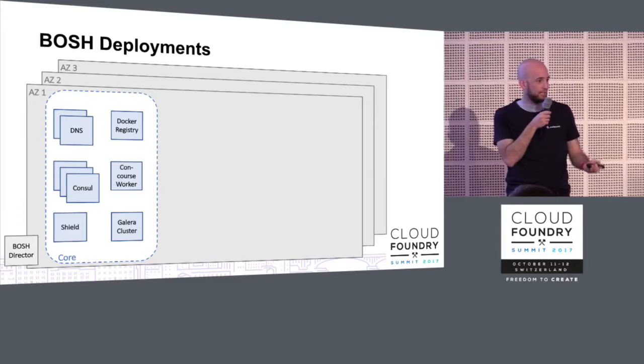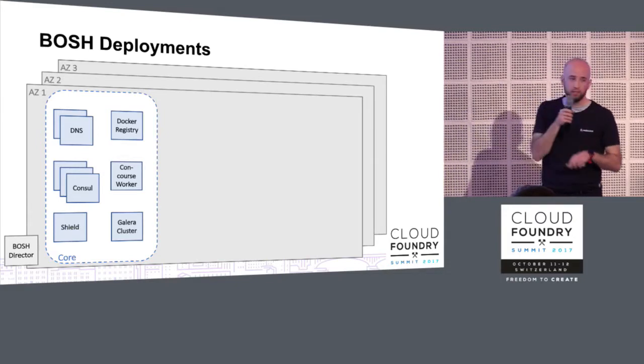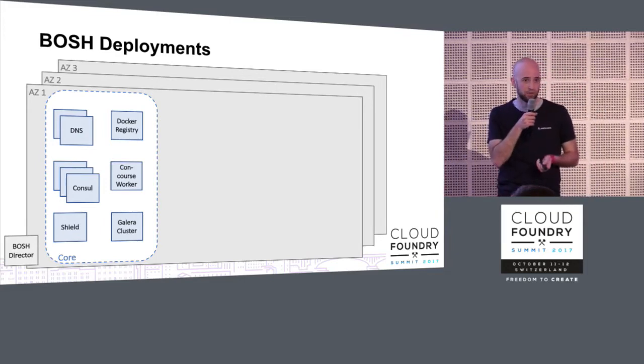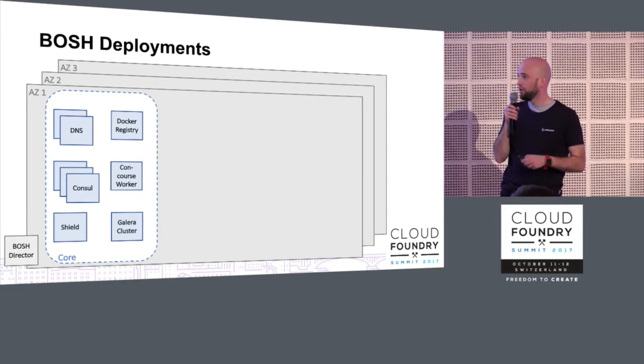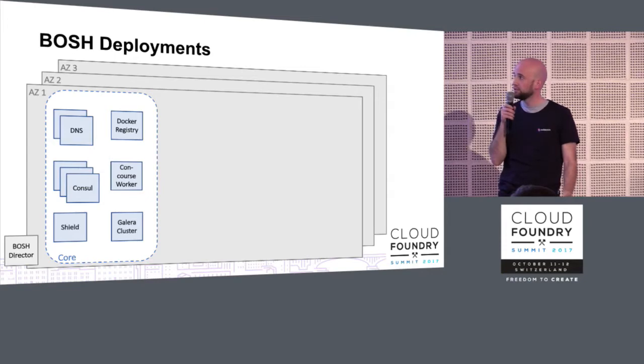The first thing we usually deploy is what we call the core infrastructure. Here we have a DNS deployment based on Unbound, which serves as the whole DNS backend for all the other components that follow. This goes together with the Consul cluster that we deploy. We actually have three Consul nodes per availability zone, which translates into a nine-node Consul cluster.